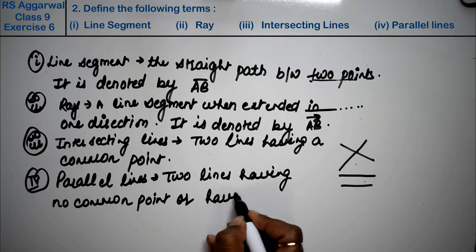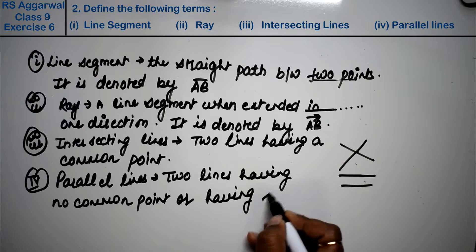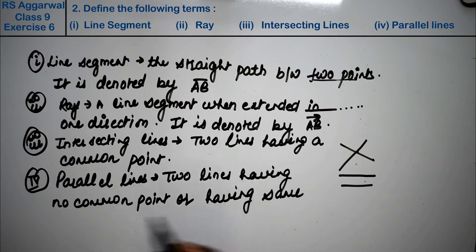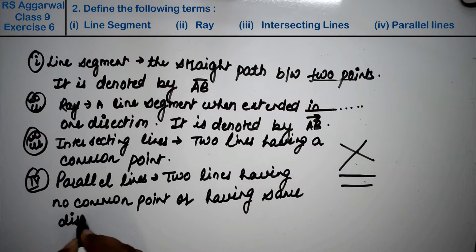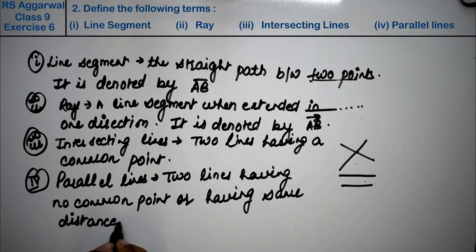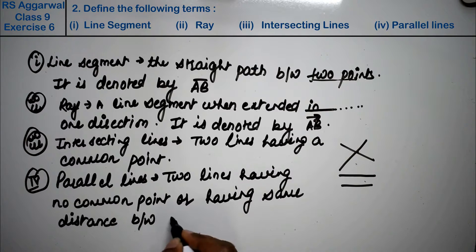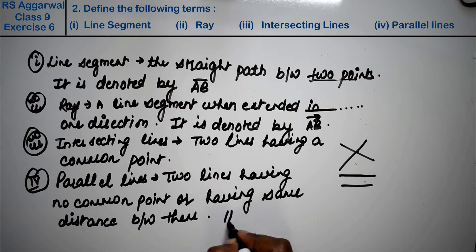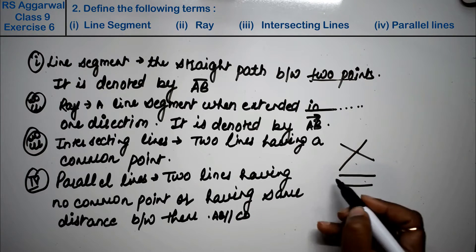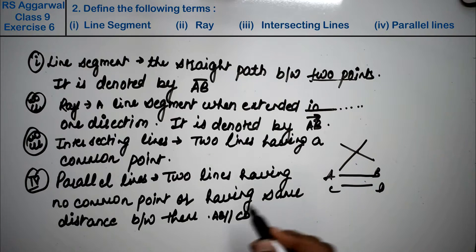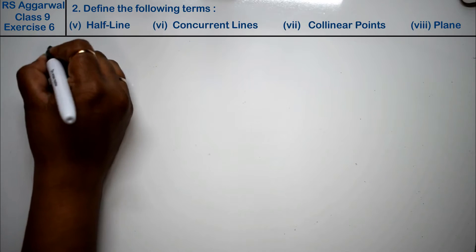Or having same distance between two lines, ke bich mein same distance hua toh bhi wo parallel lines kehlayengi. Distance between them is called parallel lines. Aur denote kaise hoti hain, aise: AB is parallel to CD. AB hain aur yeh CD hain, yeh do parallel lines bunti hain.